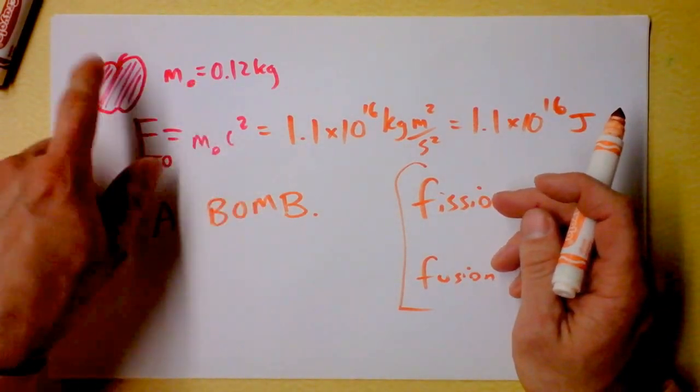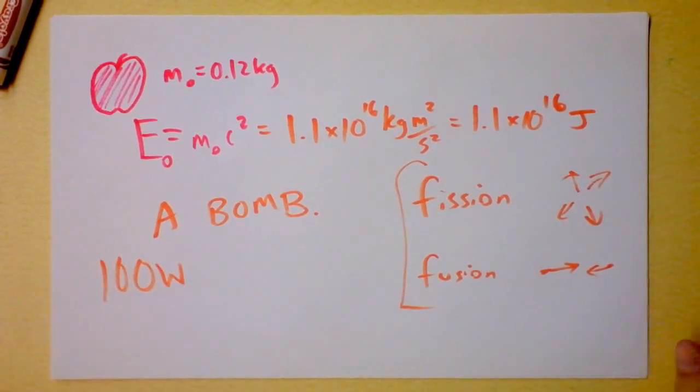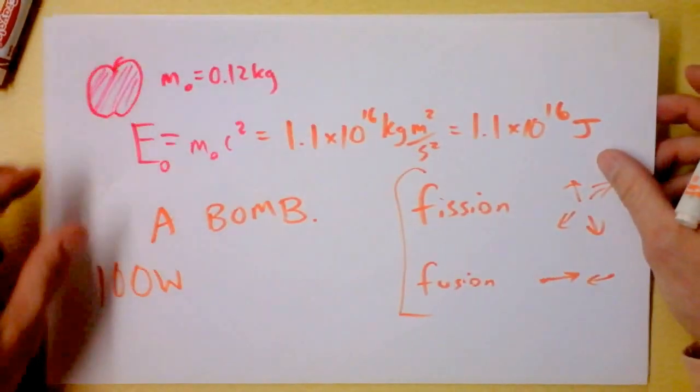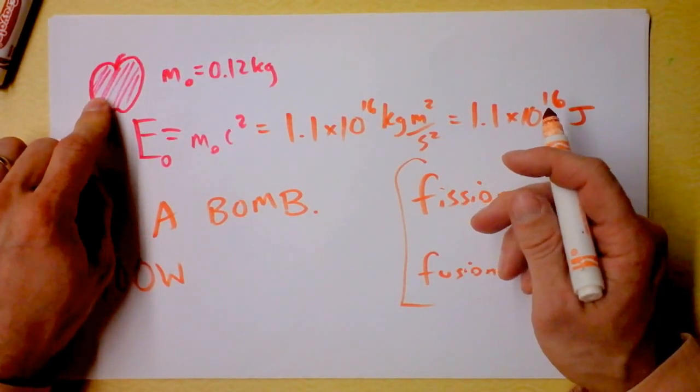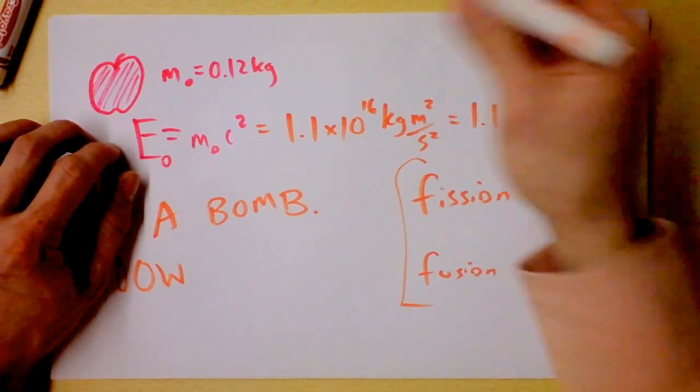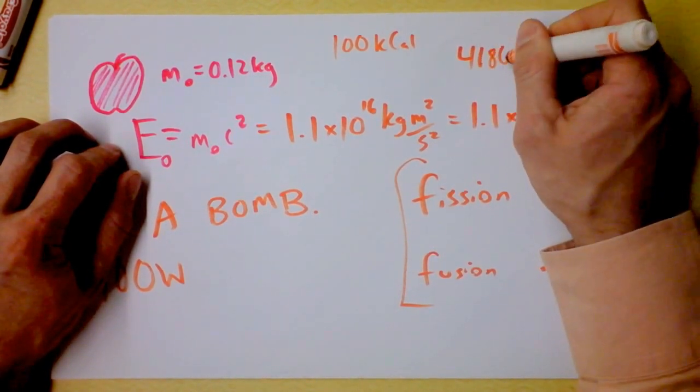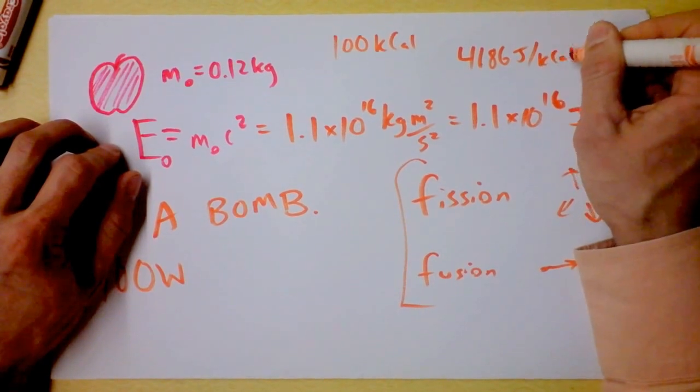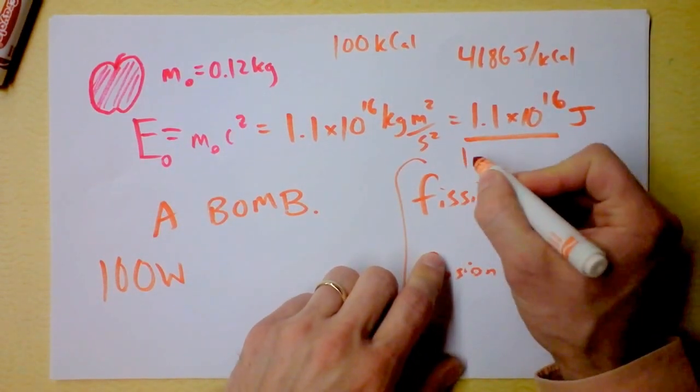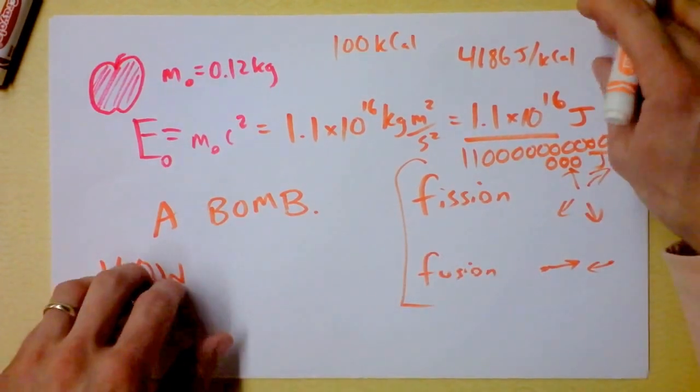If I had an apple and could annihilate it very slowly over a long time, I would get enough energy to light a 100-watt light bulb for 10 million years. Wow. Store your apples. That means the nuclear energy contained in this apple is way more than the chemical potential energy. If I eat this apple, I get maybe 100 kilocalories, that's 4,186 joules per kilocalorie, so about 400,000 joules. But the nuclear energy is 1 with 15 zeros following it. That's a lot more joules.